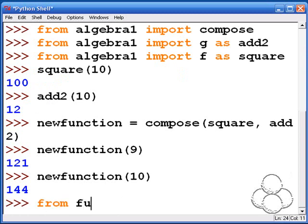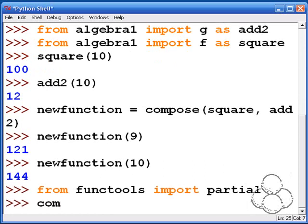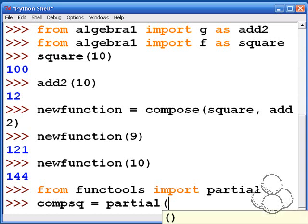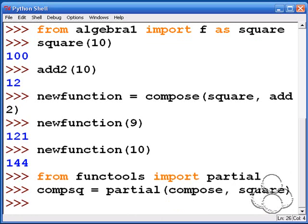This is what's called currying in computer science sometimes, and it's basically to partially evaluate a function. This is a great example of how Python makes it easy to think of functions, in this case compose, as arguments. You can take functions and pass them to other functions.